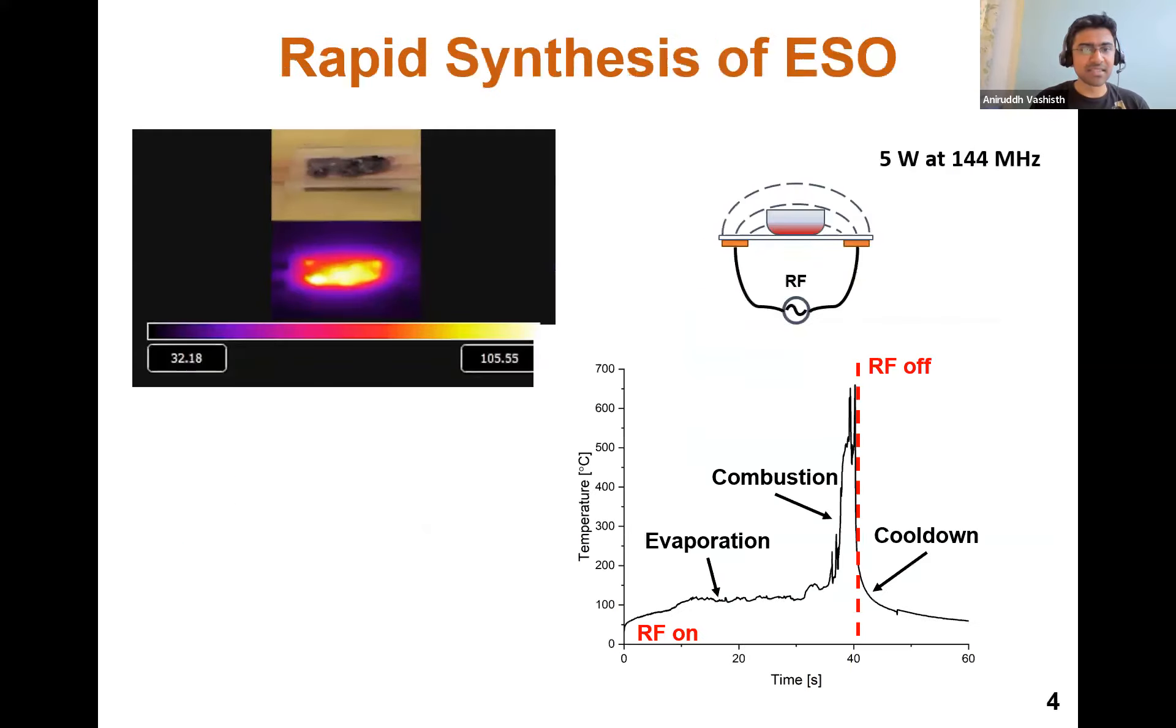So what we did, we basically synthesized ESOs using this method. We patterned these ESO particles on carbon fibers. You can see on the top left, the thermal and the visible image, where the material actually reaches close to 600 degrees Celsius in a matter of 40 seconds. And the ESO is synthesized really rapidly.